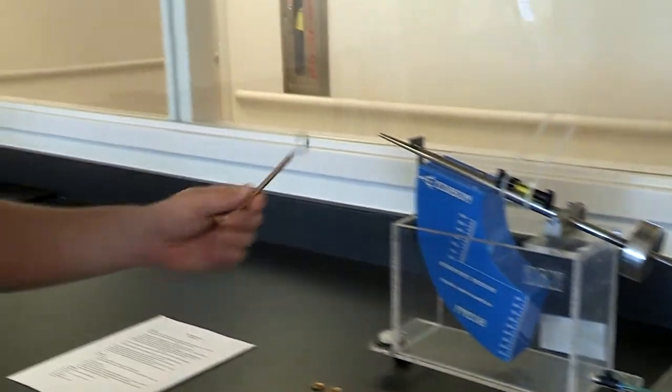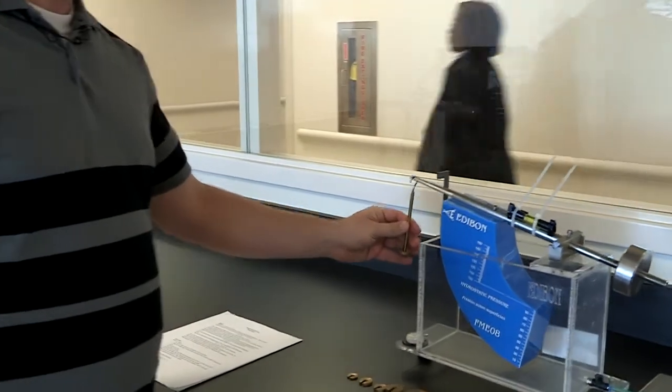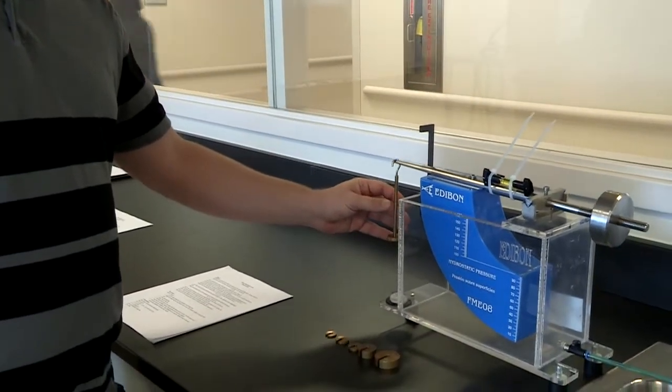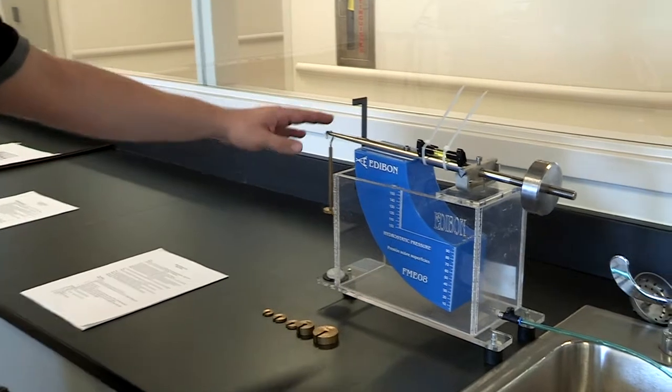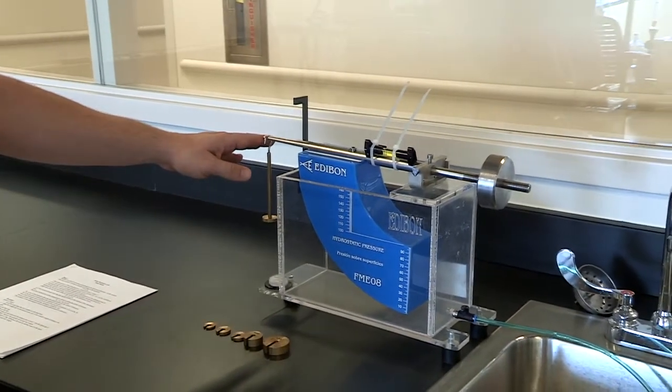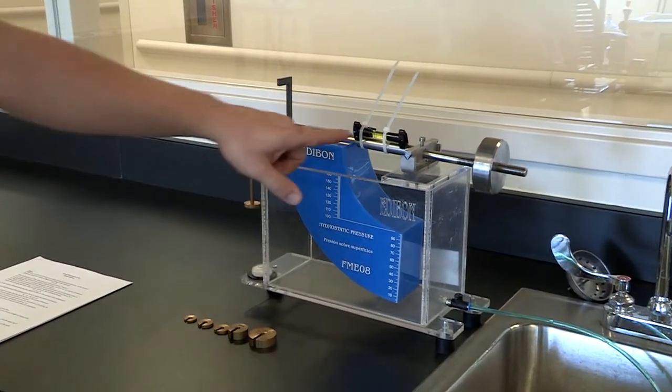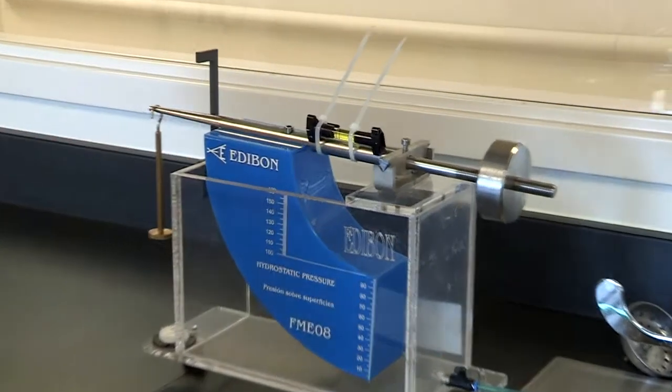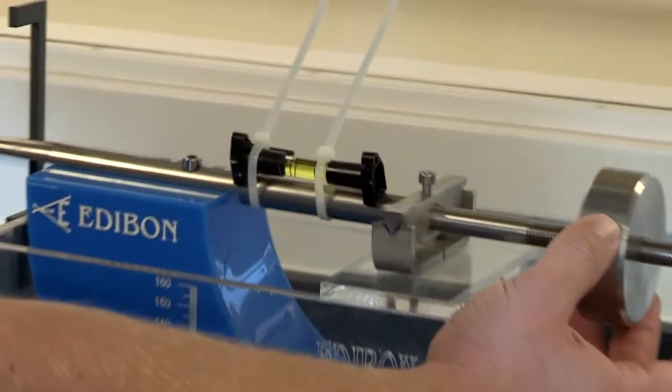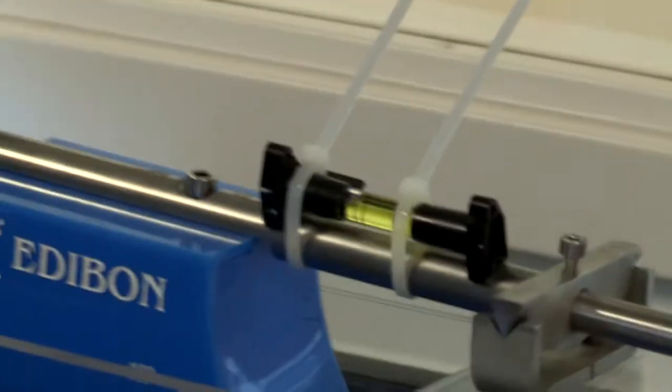Next thing we're going to do is hang the weight on the end. As you can see when it levels out, you can see that it's not balanced right now. This has to be completely balanced in order to get the test to go through.